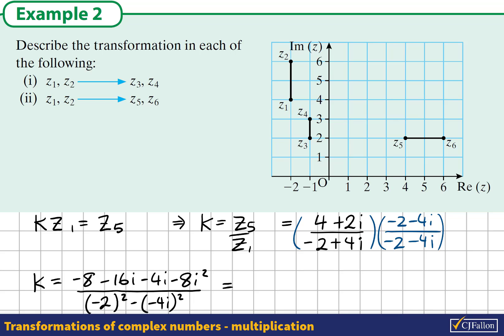Now just neatening this up, we see we have a -8 and a +8. So they cancel out, giving 0. And we end up with -16i - 4i, which is -20i. Underneath the line, we end up with 4 minus -16, which becomes 20 altogether. And we see that -i is the solution, the same as we got before.